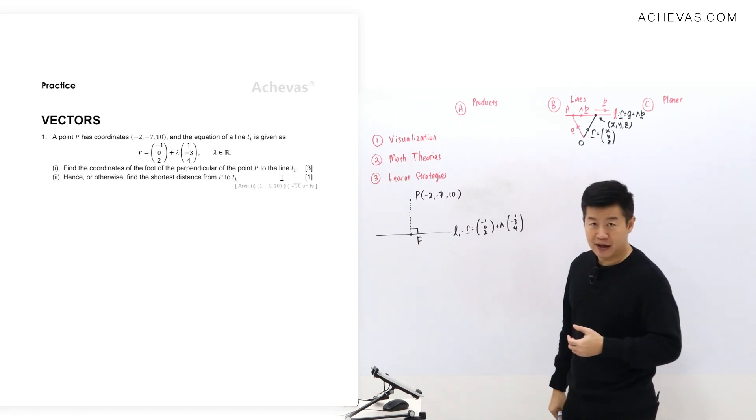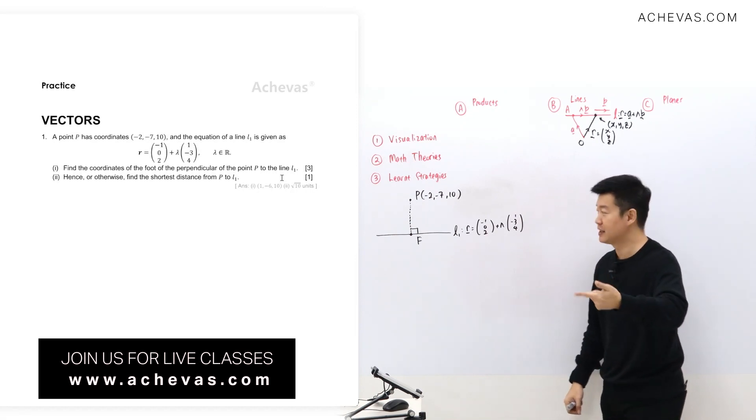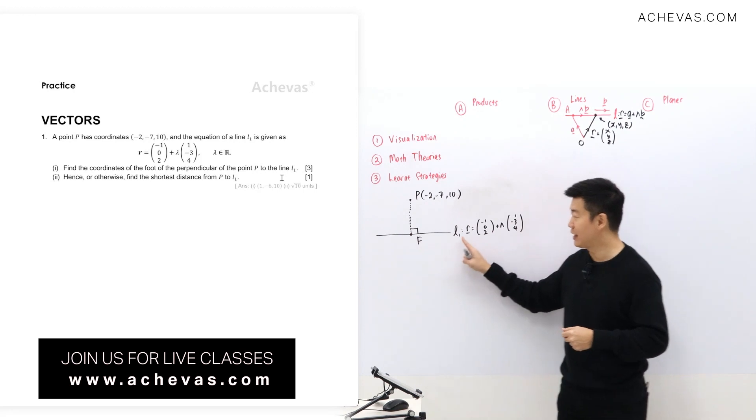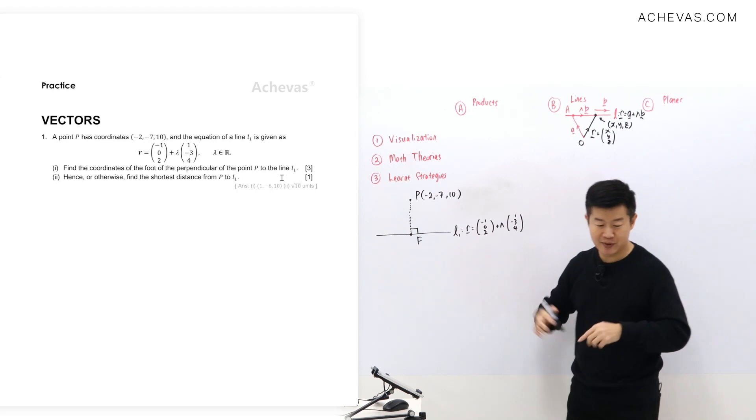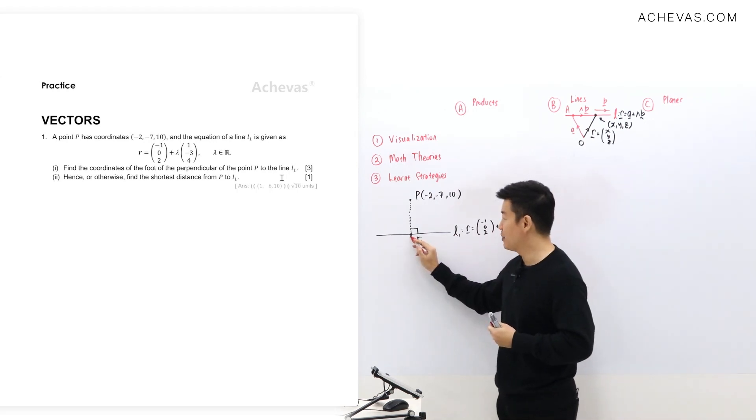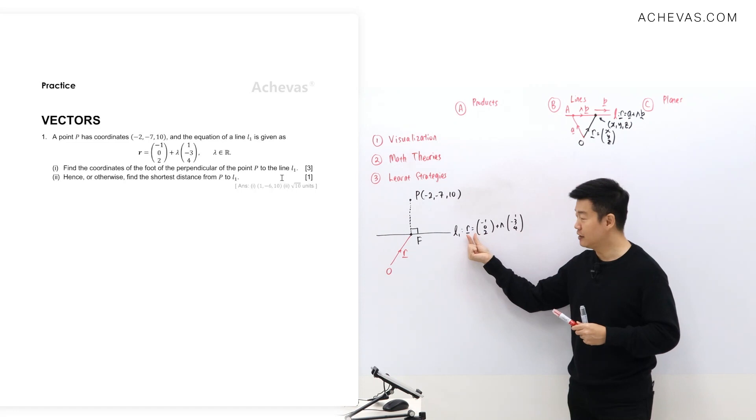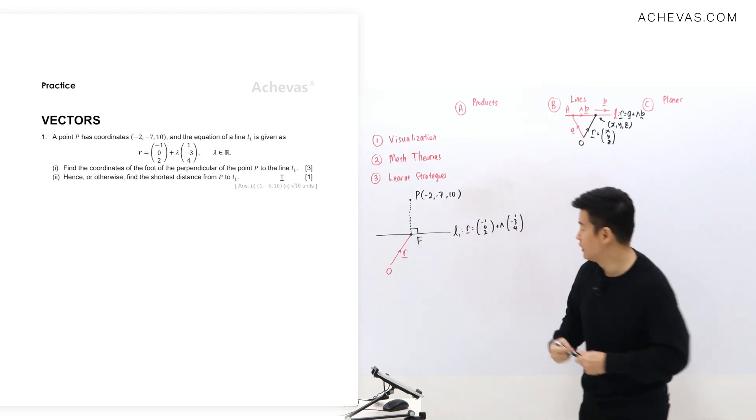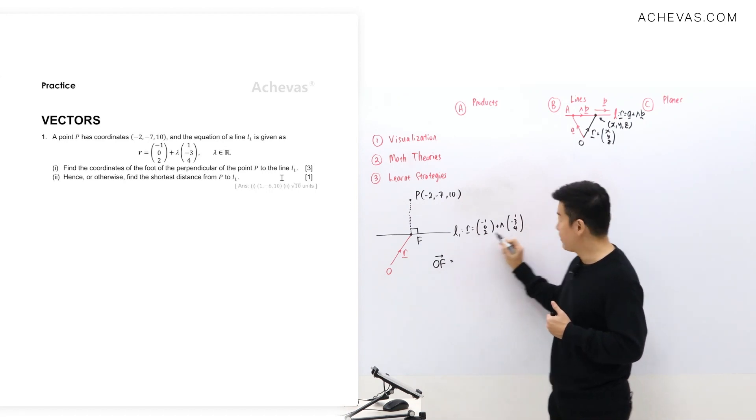So we have this point F, and we are supposed to find the coordinates of point F. We need something about point F. So F is a point that lies on the line L1, which means that L1 will be able to represent the position vector of F, correct? Because this R here represents the position vector of any point that is on the line L1. That is why if F is a point that is on L1, we can say that OF is equal to R for a particular lambda.